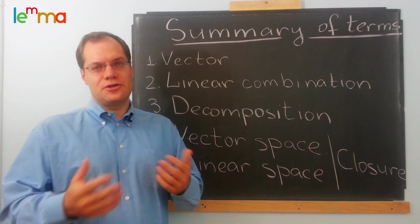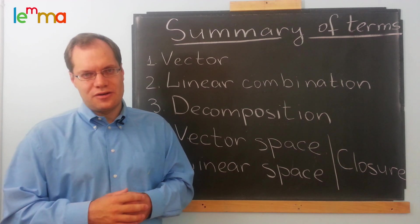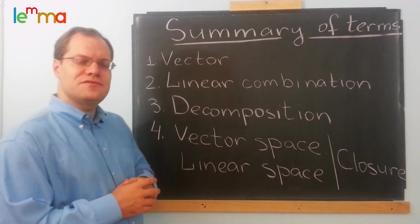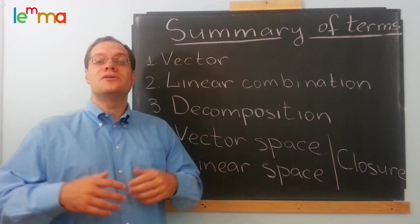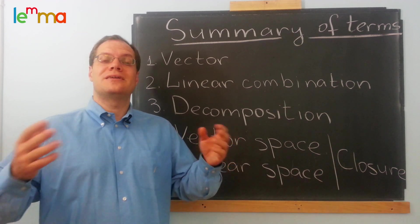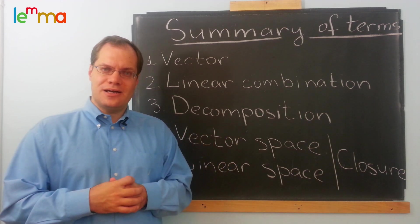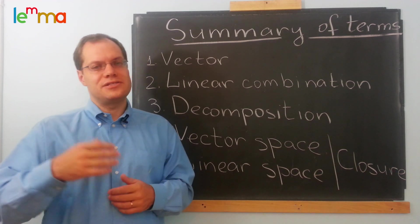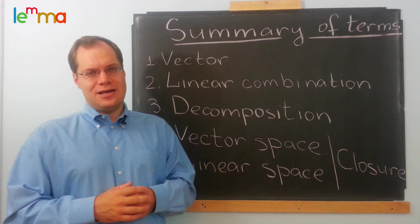Let me give you a brief summary of the terms we've encountered so far. We started with the definition of the vector. A vector was any kind of object that can be added to another object of the same kind, or multiplied by a real number, the result being another object of the same kind.